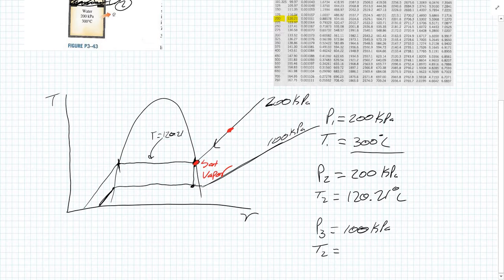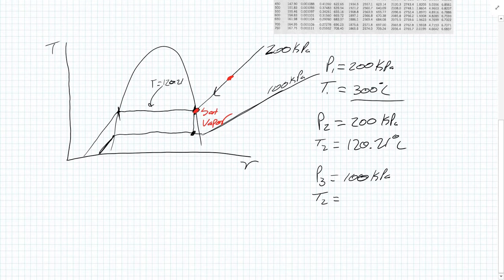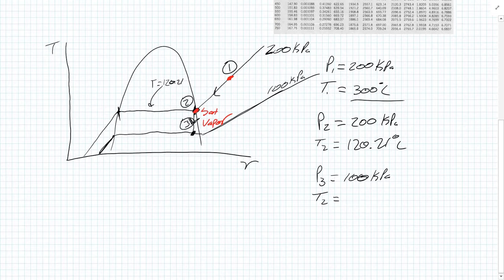That means our volume stays the same but temperature is allowed to decrease, so we have a quality in our vapor — some parts are vapor and some parts are still liquid. Then the water cools until pressure is 100 kPa. We draw arrows showing direction: starting at State 1, going to State 2, then ending at State 3, with T, P, and V values labeled at the end states.